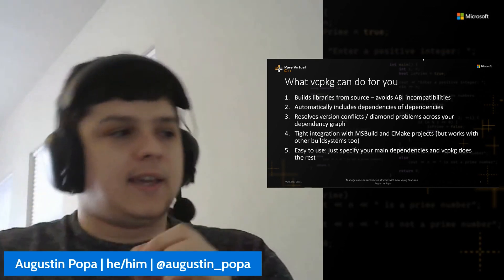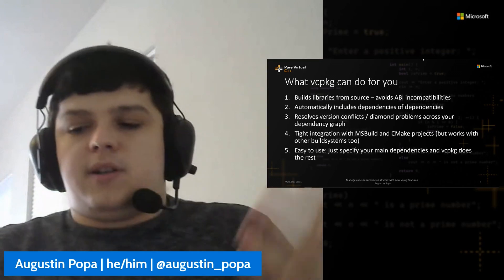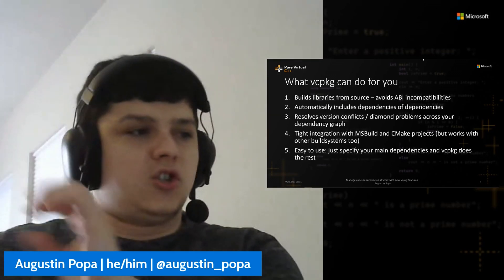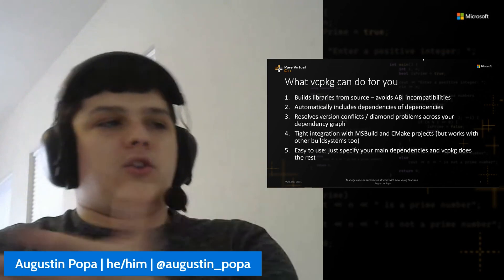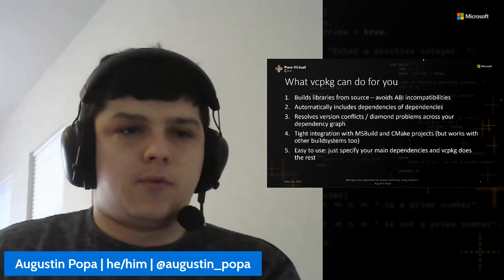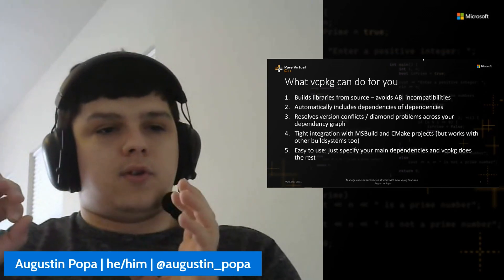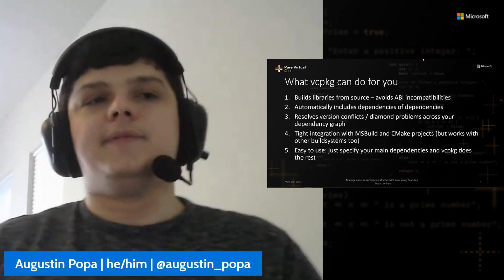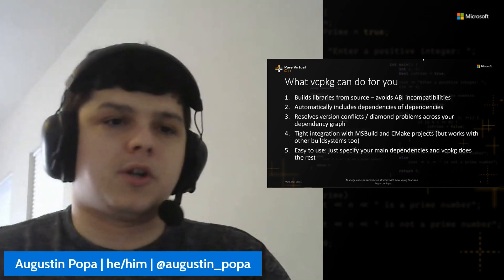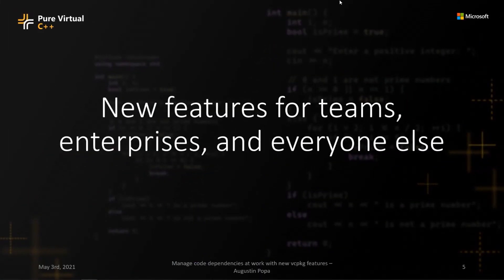Ease of use is key. When you install a set of libraries, it's as simple as going into the terminal and typing 'vcpkg install' followed by the library names. You might also specify how you want those libraries compiled — for example 'x64-windows' — or provide a custom build configuration. You can create your own triplets as well. That's basically the fundamentals of using vcpkg.